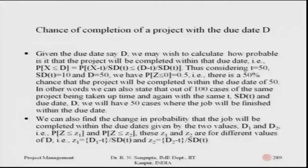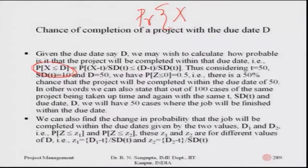This is slide 289, which addresses the chance of completion of a project within the due date. Given the due date D, we wish to calculate how probable — in a probabilistic, non-deterministic sense — it is that the project will be completed within that due date. What we need to find out is P(r), the probability. X is the random variable denoting the overall distribution of project time, with expected value T and standard deviation SD(T) as shown in the normal distribution.